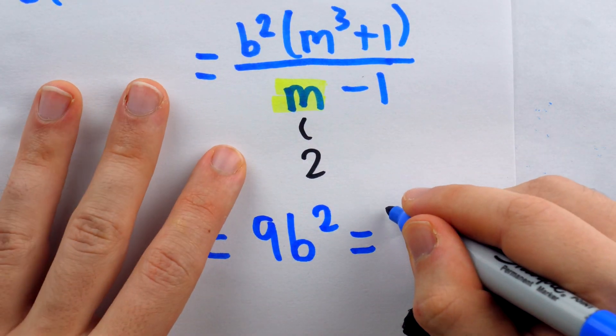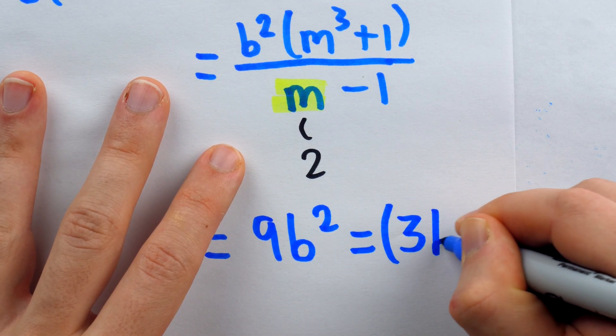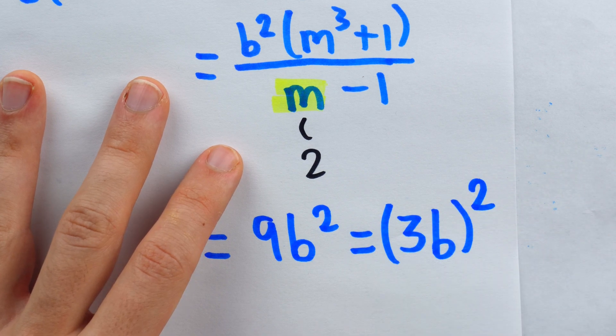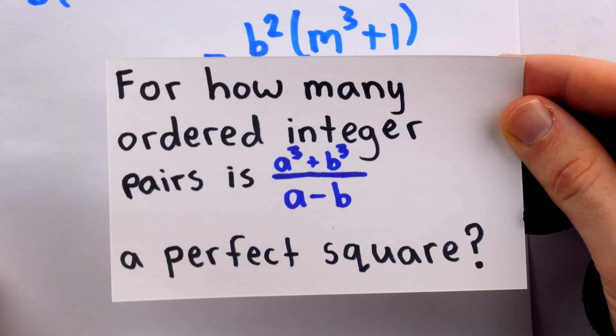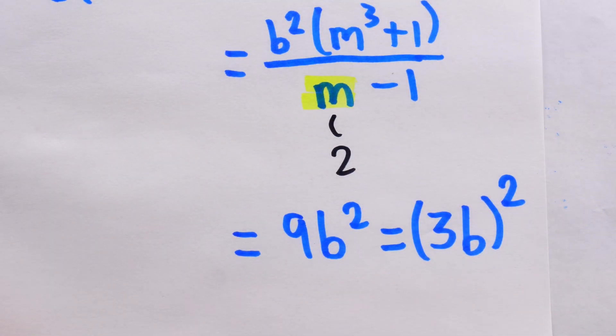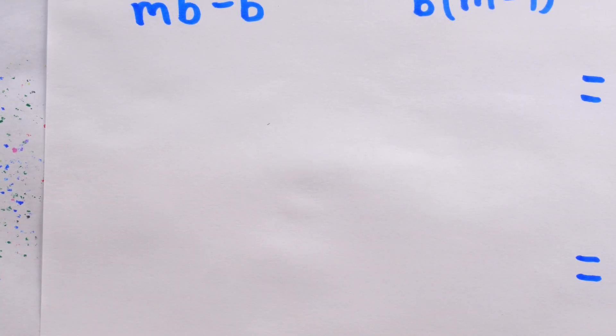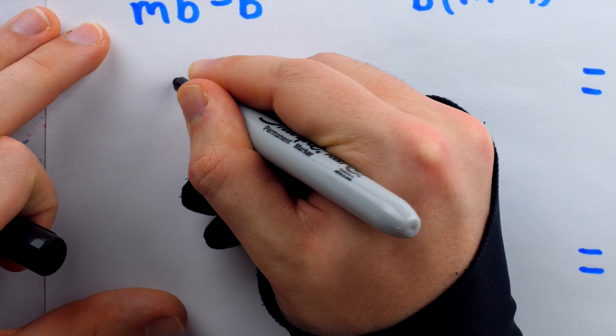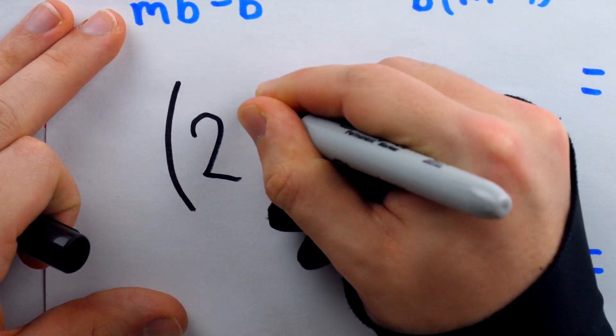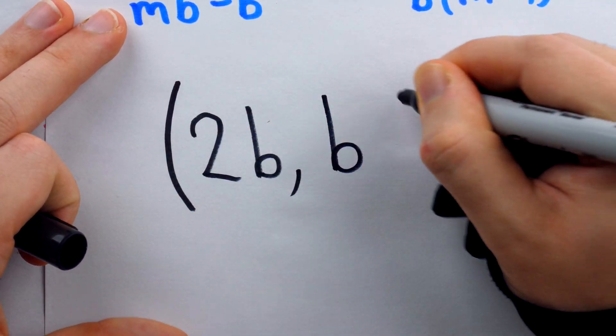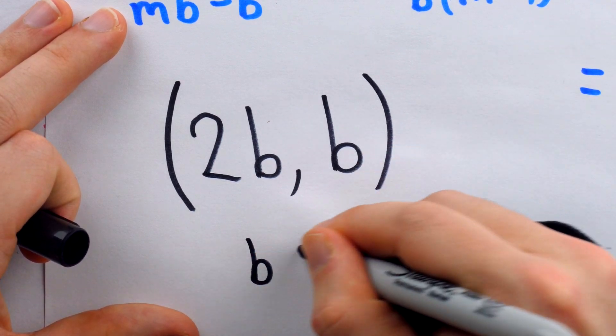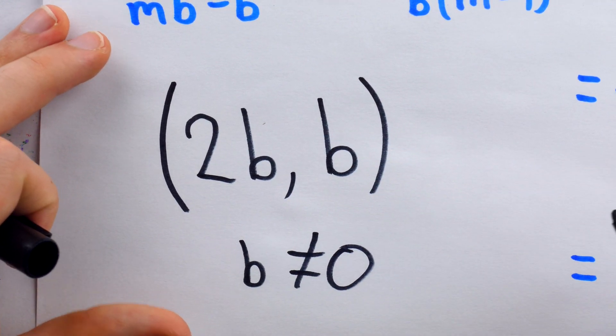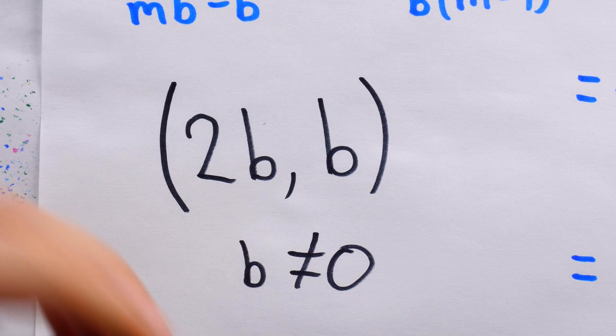So what's left is 9b². And yes, of course, that is a square number. It's (3b)². So for how many ordered integer pairs is this expression a perfect square? Well, we've just found that the answer is in fact infinitely many. Any ordered integer pair of the form (2b, b), where b is not equal to zero, is going to cause the expression to be a perfect square.